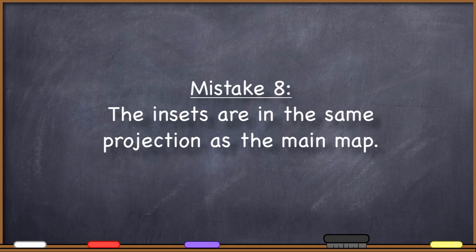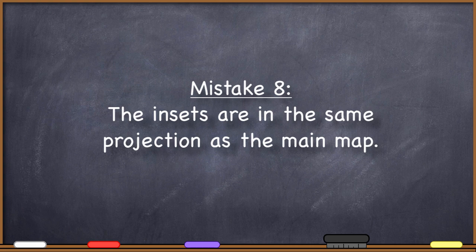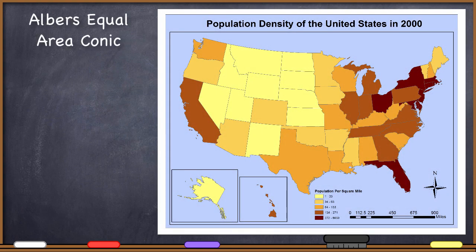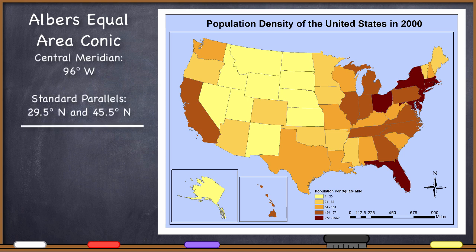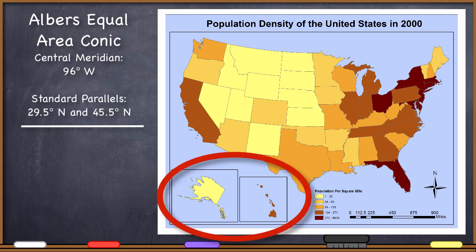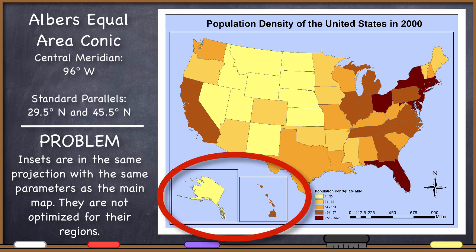Number eight, the insets are in the same projection as the main map. Often this can simply very straightforwardly mean that your inset, and thus your map, is incorrect. But besides that, it also looks like the person who made the map is trying to cut corners. For example, even if you have a projection that has been optimized for the contiguous United States, which looks reasonable, but the insets of Alaska and Hawaii look all distorted, it's a dead giveaway that the projections of the insets were not optimized for the regions they show. The person who drew the map seems to know they needed to use a projection, but didn't know enough to make sure their insets were also correct.